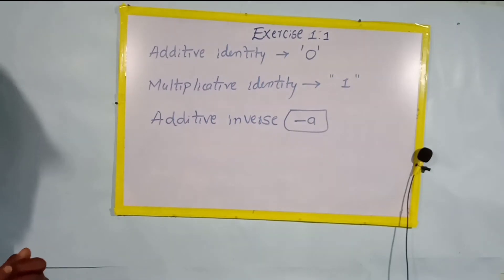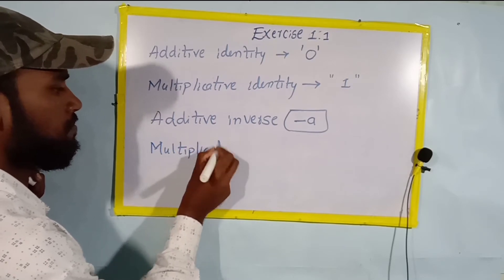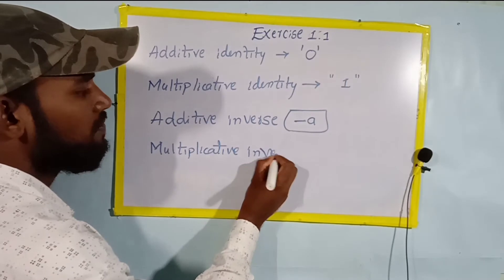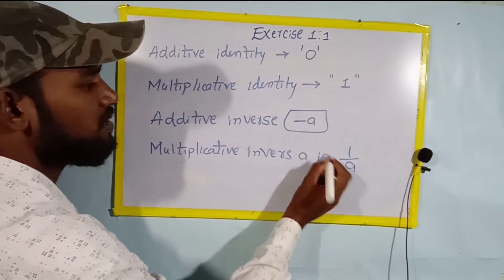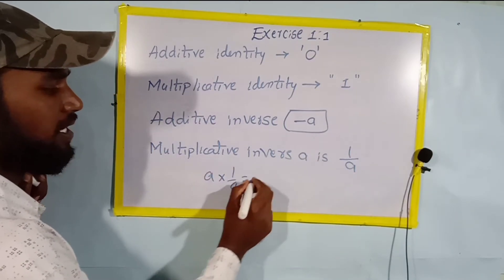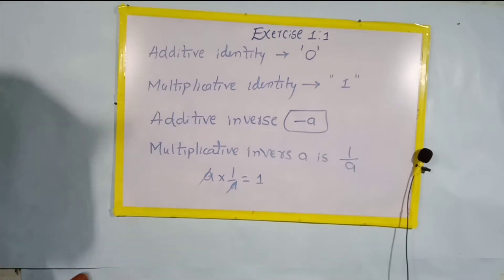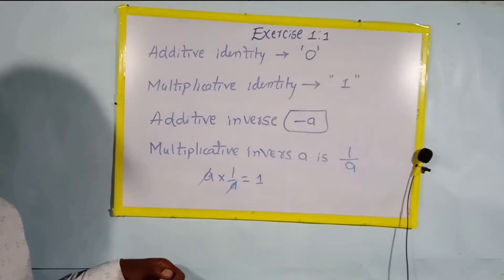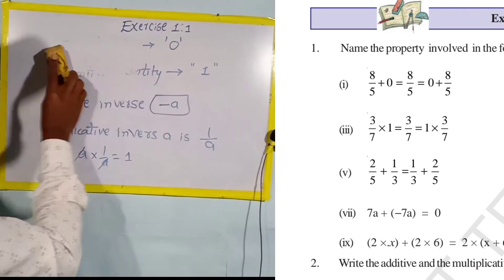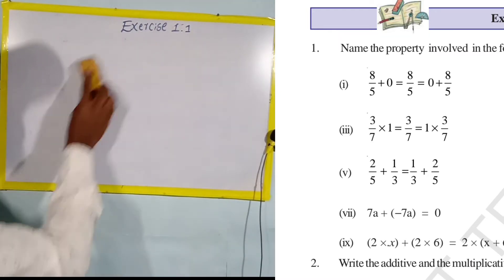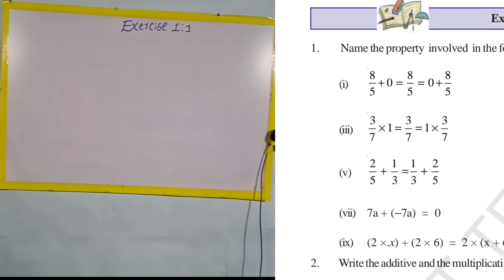Now the multiplicative inverse: a into 1 by a equals 1, so they cancel to give one. Just remember these six properties. Now we are going to solve the Exercise 1.1 problems.